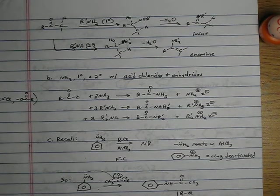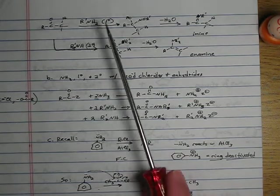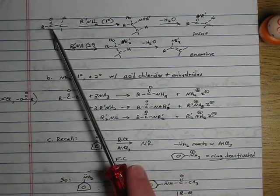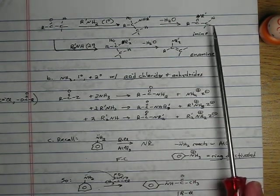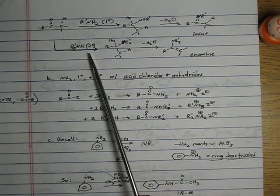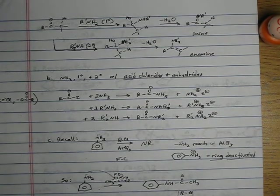So recall that if you have an aldehyde or a ketone, you can react an aldehyde or ketone with a primary or secondary amine. Recall aldehyde or ketone, primary amine forms an imine. Secondary amine forms an enamine. We did that a couple chapters ago.